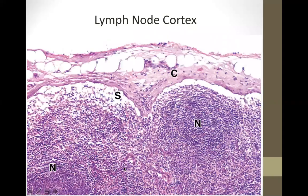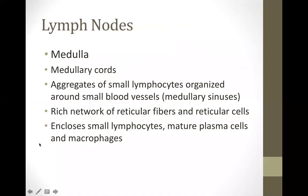This is a high-power magnification of the cortex of the lymph node. The capsule and nodular lymphatic tissue are visible — the presence of nodular lymphatic tissue is your clue that you are at the cortex area, close to the capsule. In the medulla, you find medullary cords — aggregates of small lymphocytes organized around small blood vessels — and medullary sinuses. The stroma also has reticular cells and reticular fibers, with small lymphocytes and mature plasma cells.